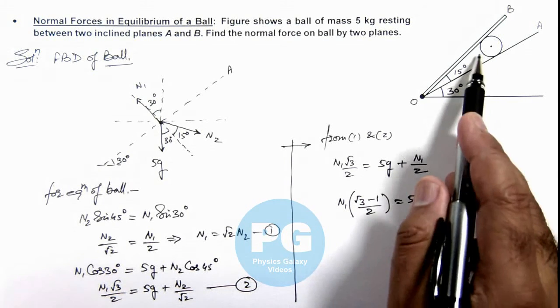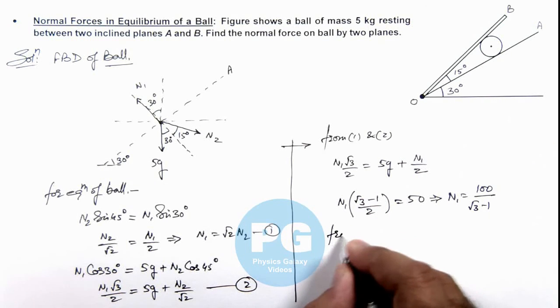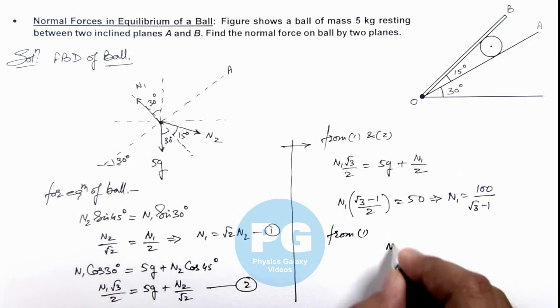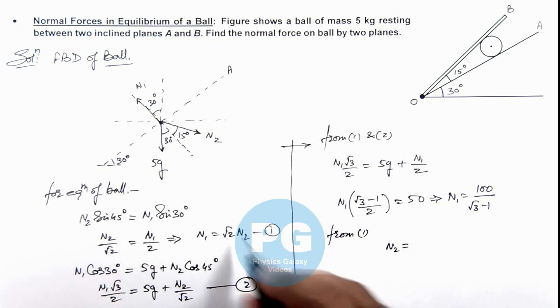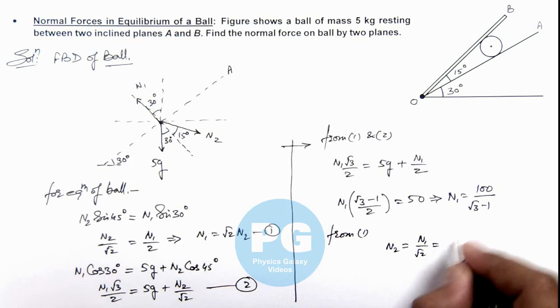This is the normal reaction on the ball due to incline A. And now from equation 1, we can write the value of N₂ as N₁/√2, so this can be written as 50√2/(√3 - 1).